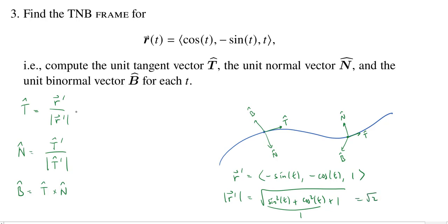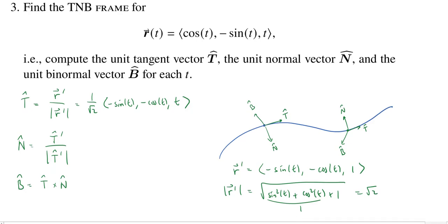All right. So dividing by the magnitude, we're going to write one over root two times negative sine of t, negative cosine of t, comma one. Of course, I could distribute this one over root two into all three of the components. I'm not going to, though. It's a little bit easier to keep it outside in the next calculations.